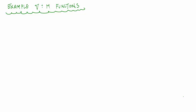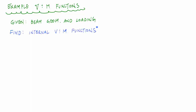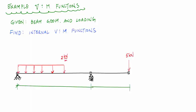Welcome back to Structure Free Learning. In this video we're going to do an example problem on shear and moment functions. I'm given my beam geometry and loading and asked to find the internal shear and moment functions. The beam has a two kilonewton uniformly distributed load, a pin at A, a roller support at B, and a concentrated force of five kilonewtons at point C. The segment BC is an overhang.